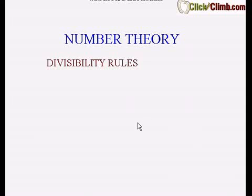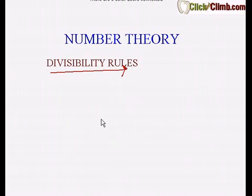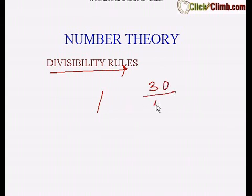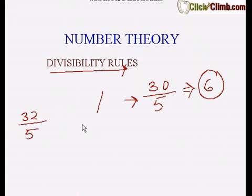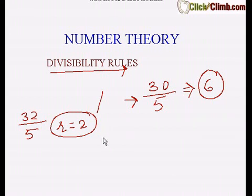Hi everyone, today we'll be learning about number theory. Number theory is a pretty long topic, so we divide it into small parts. The first topic is divisibility rules. Divisibility is a useful property of all numbers — for example, 4 divides 8, 5 divides 25, 5 divides 30. If a division produces a remainder other than 0, the numbers are not divisible. For example, 32 divided by 5 gives remainder 2, so 32 is not divisible by 5.